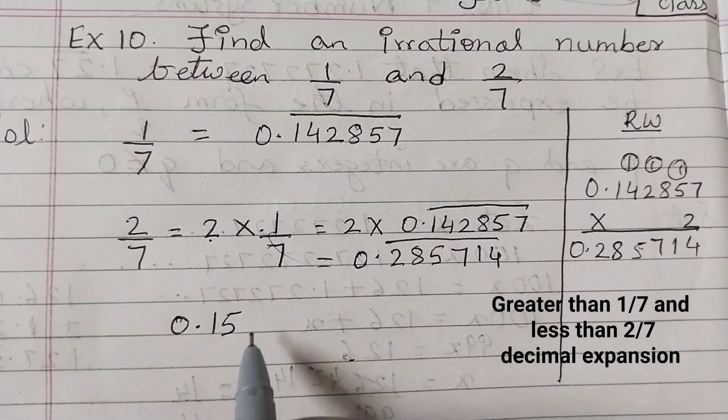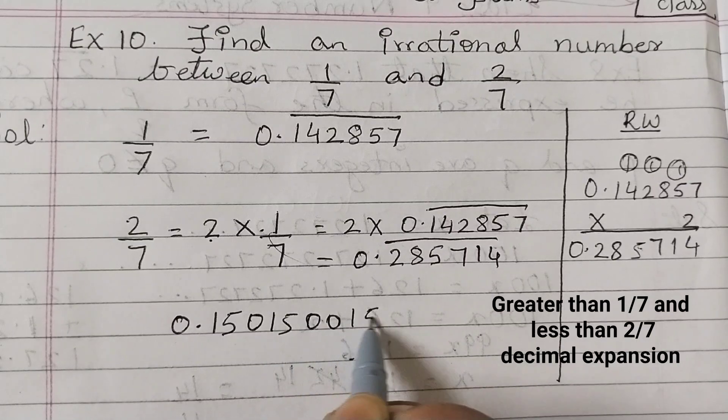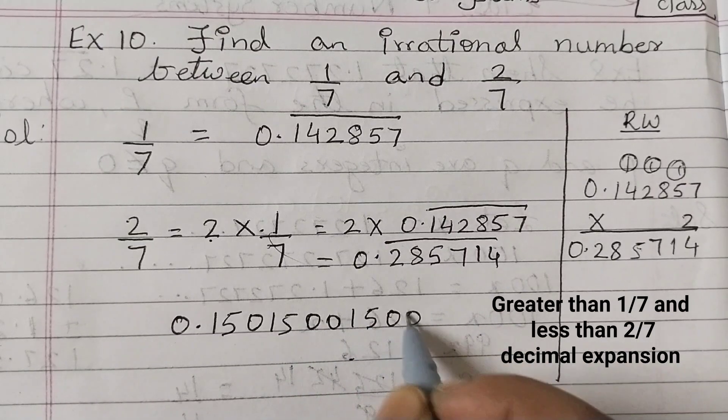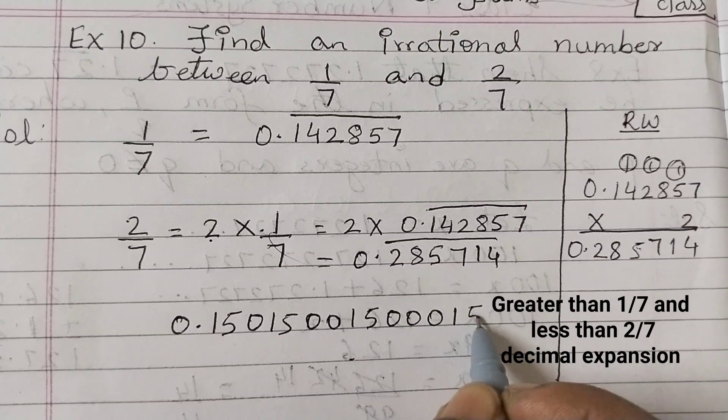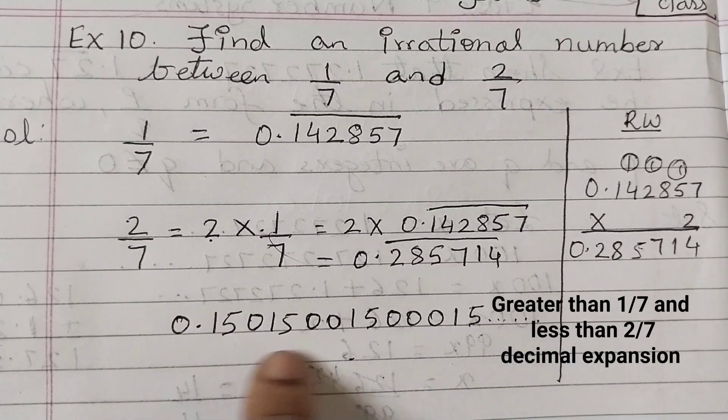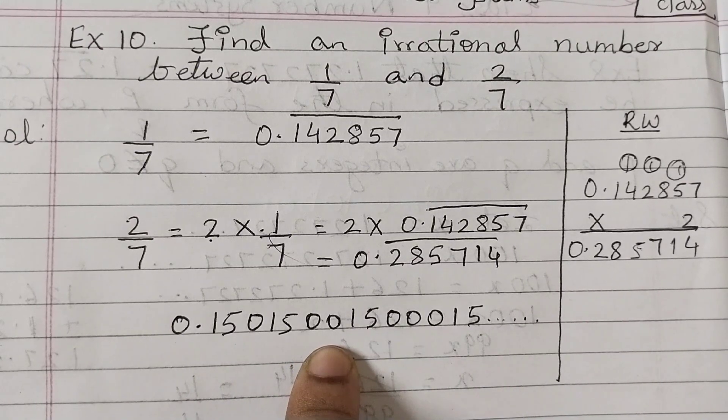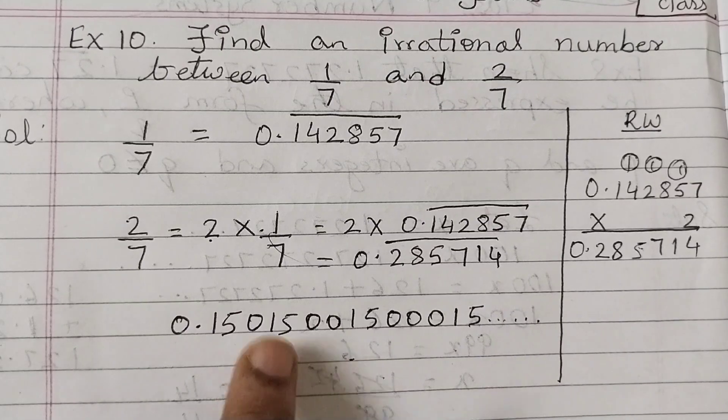So 0.15 0 1 5 0 0 1 5 0 0 0 1 5 and it would go on. So this is a non-terminating non-repeating decimal number, so this is an irrational number. This is one of the examples.